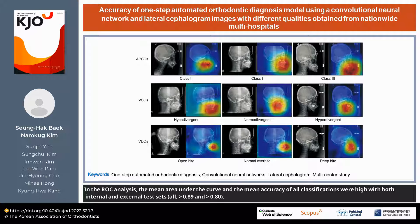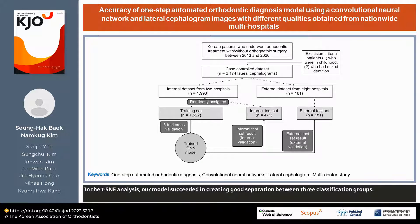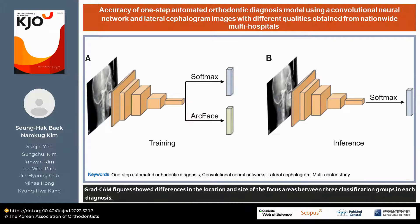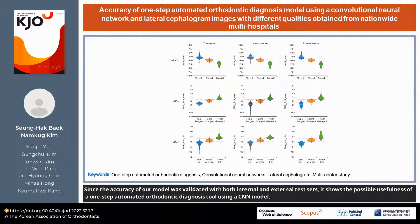In the ROC analysis, the mean area under the curve and the mean accuracy of all classifications were high with both internal and external test sets. In the t-SNE analysis, our model succeeded in creating good separation between the three classification groups. Grad-CAM figures showed differences in the location and size of the focus areas between the three classification groups in each diagnosis.